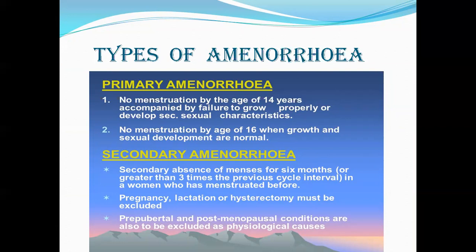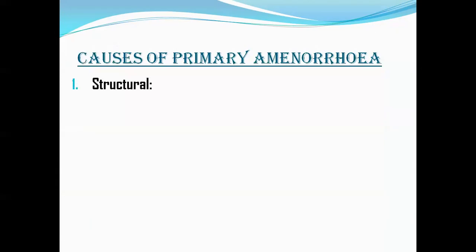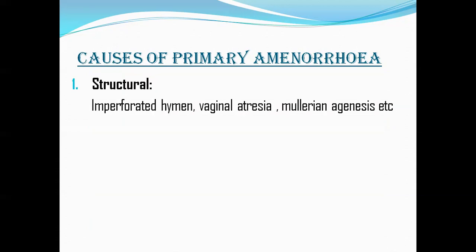To summarize: primary amenorrhea — up to age 14 without secondary sexual characteristics, or no menstruation by age 16 with normal sexual development. Secondary amenorrhea — at least three missed cycles or more than six months without menstruation in a previously menstruating woman, after ruling out pregnancy, lactational amenorrhea (where high prolactin suppresses FSH and LH), hysterectomy, and pre-pubertal or post-menopausal ages. Causes of primary amenorrhea include structural causes like imperforate hymen, vaginal atresia, and Müllerian agenesis.